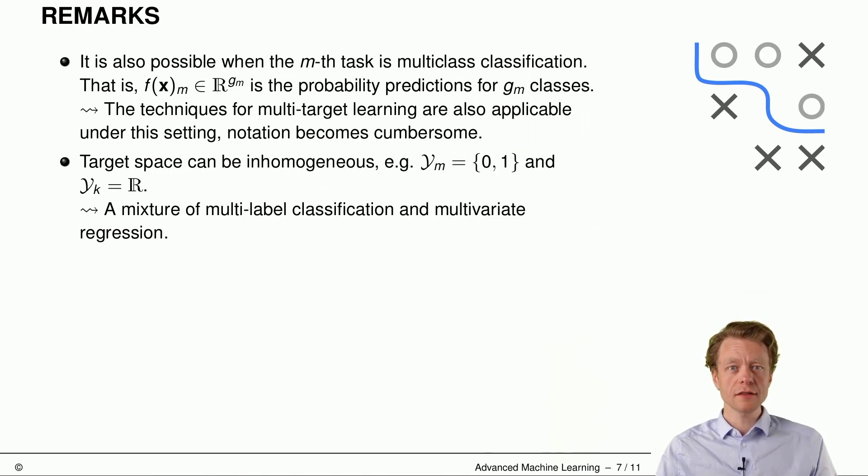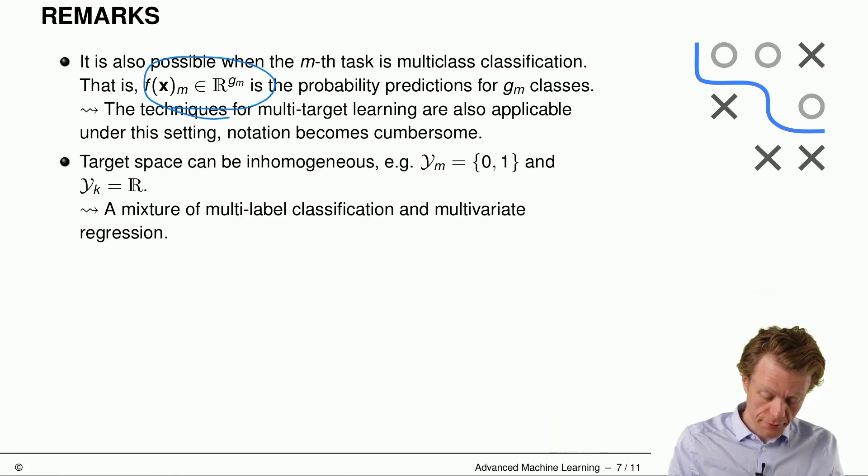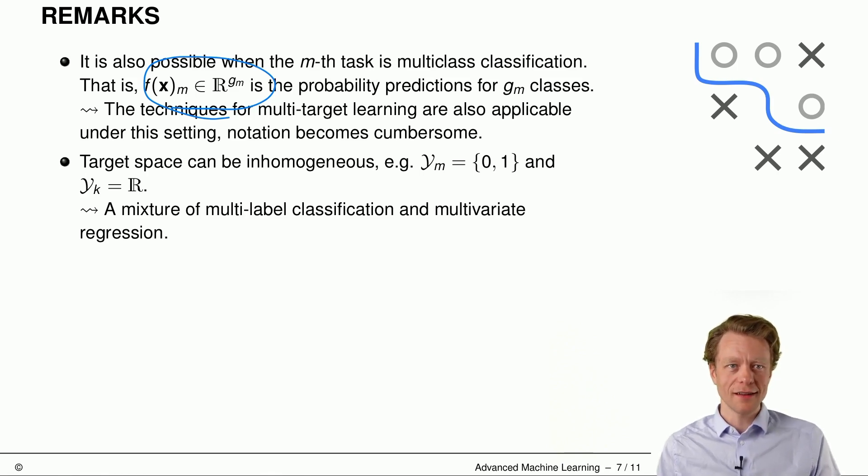So two remarks. I already teased the first one here. It's also possible to have multi-class classification within each target M. So this would mean that the scores are then from R to the power of G with index M, if we have G with index M classes or subscript classes. Techniques for multi-target learning are equally applicable, but the notation becomes somehow more cumbersome because we have one more dimension. So let's first start out without the multi-class classification here.